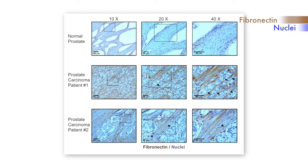To see whether this pathway might operate in vivo, the researchers examined the organisation of fibronectin in prostate and pancreatic tumour samples. When stained for fibronectin, they saw that at invasive sites where cancer cells are invading, there were aligned fibronectin fibres that cancer cells appeared to be interacting with — indicating that fibronectin alignment may be a clinical factor aiding cancer cell migration in vivo.